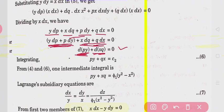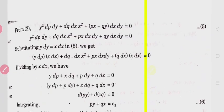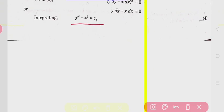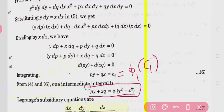You can check: y·dp + p·dy is the derivative of (py) by the product rule, and x·dq + q·dx is the derivative of (xq). So d(py) + d(xq) = 0. Taking integration gives py + xq = c₂. We also have y² - x² = c₁. Therefore c₂ is a function of c₁, and since c₁ = y² - x², we get the first intermediate integral: py + xq = φ₁(y² - x²).